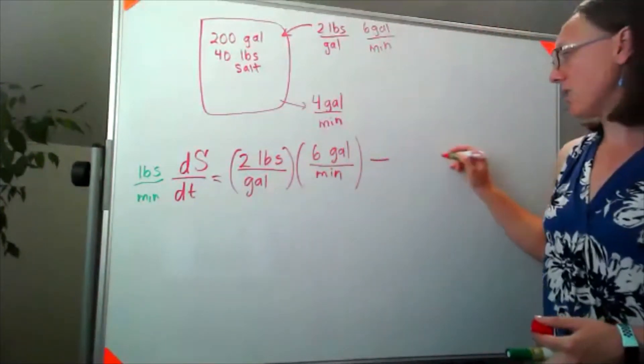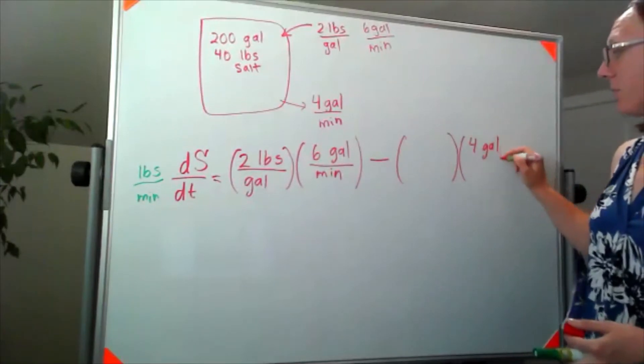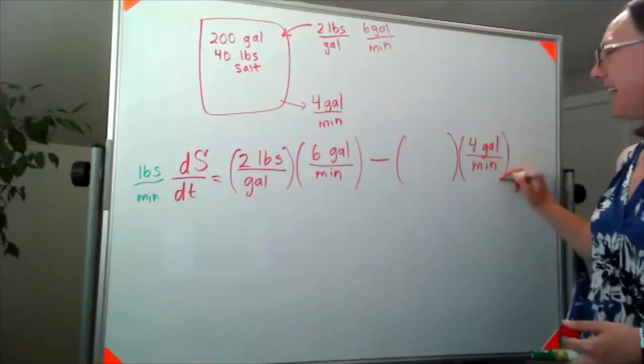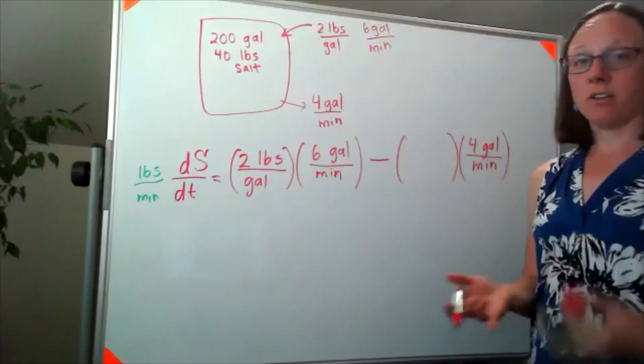What's flowing out is flowing out at four gallons per minute, but we haven't been given the concentration, and that's sort of the trick to all of these tank problems.